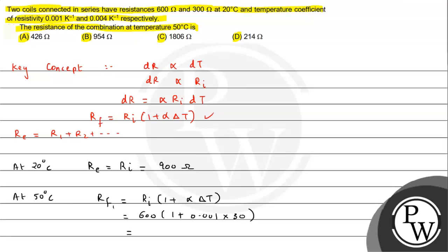Similarly, R_f2 is the resistance of coil 2 at 50 degrees Celsius. Using the same formula, the initial resistance is 300 ohm times (1 plus alpha 0.004 times 30). This result comes out to R_f2 equals 336 ohm.